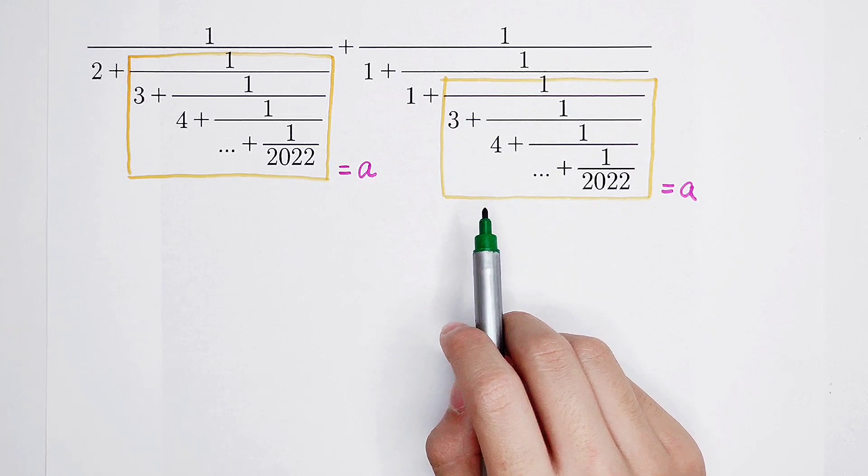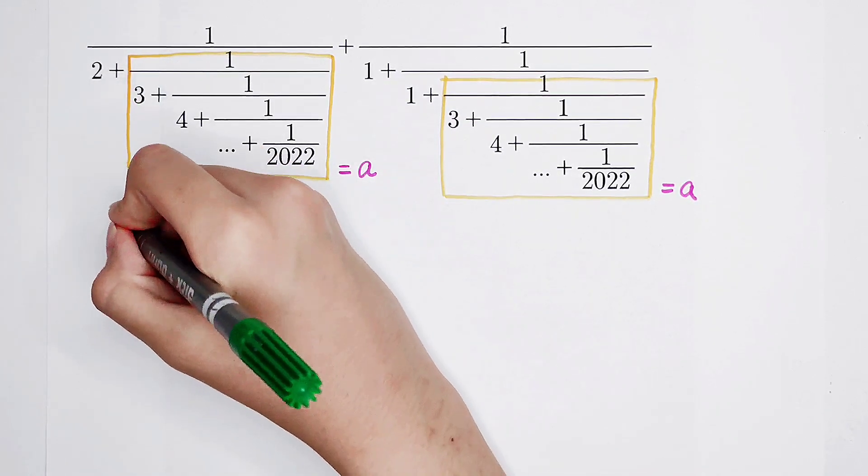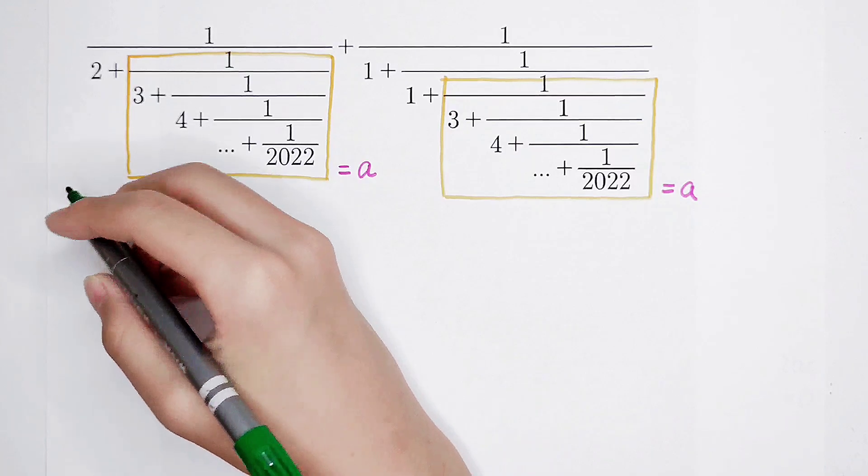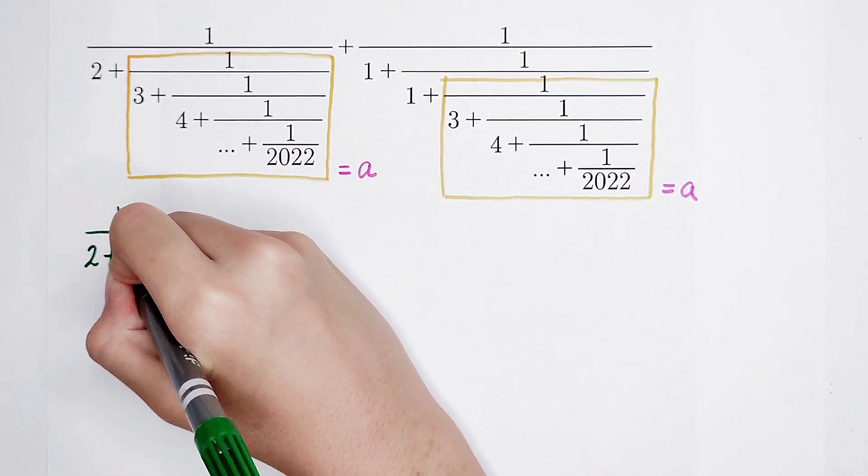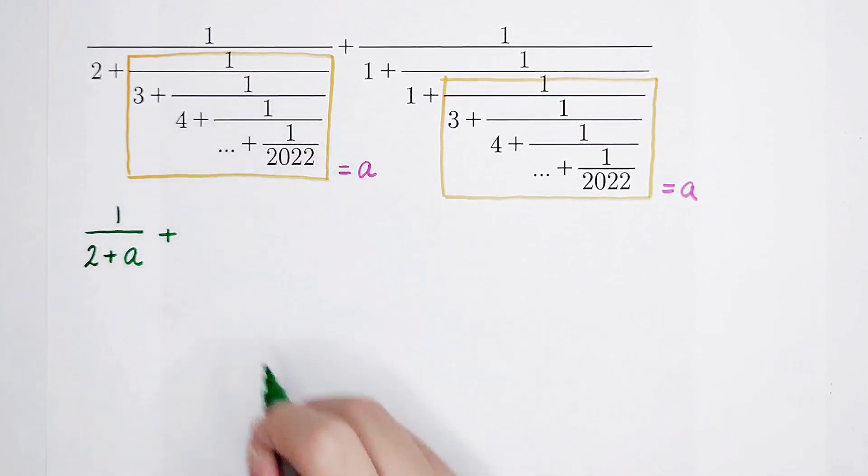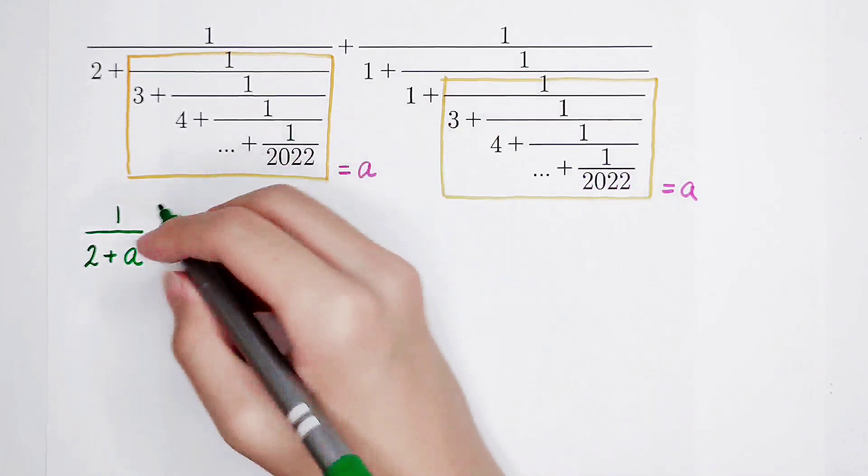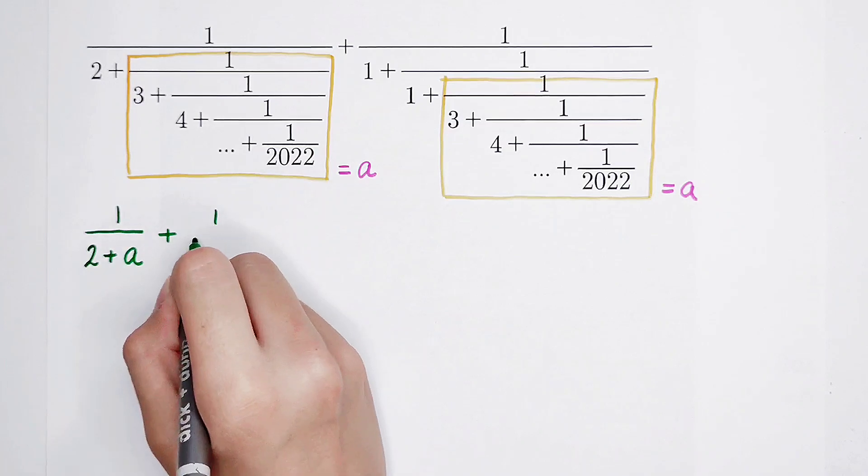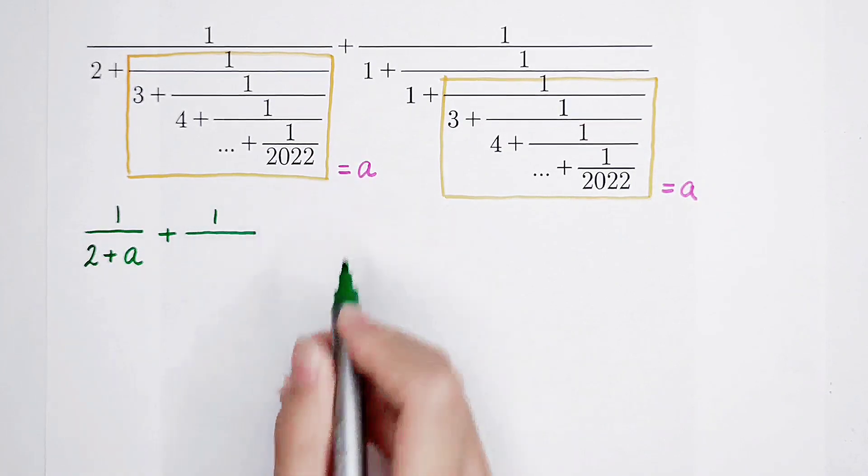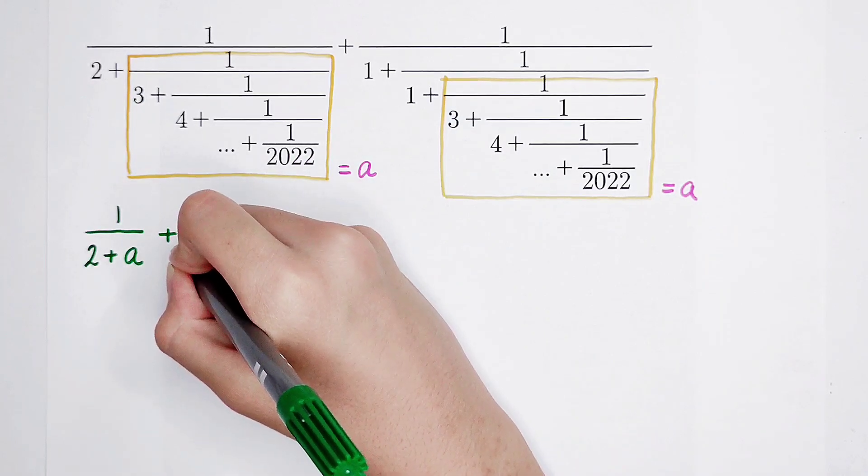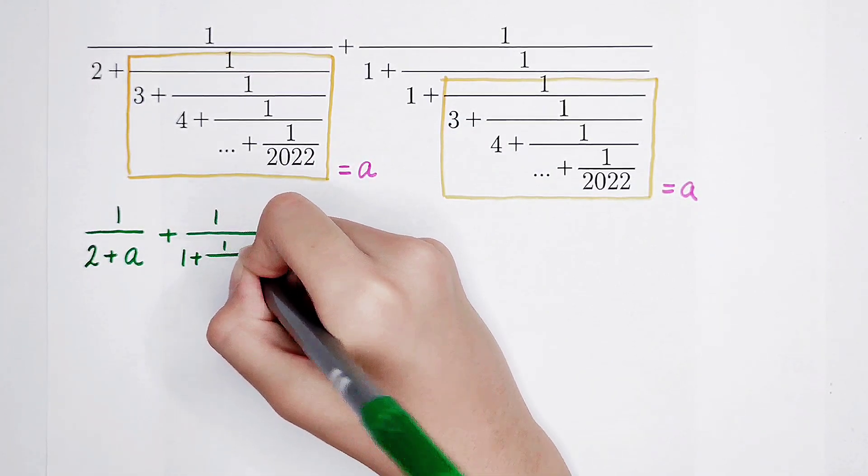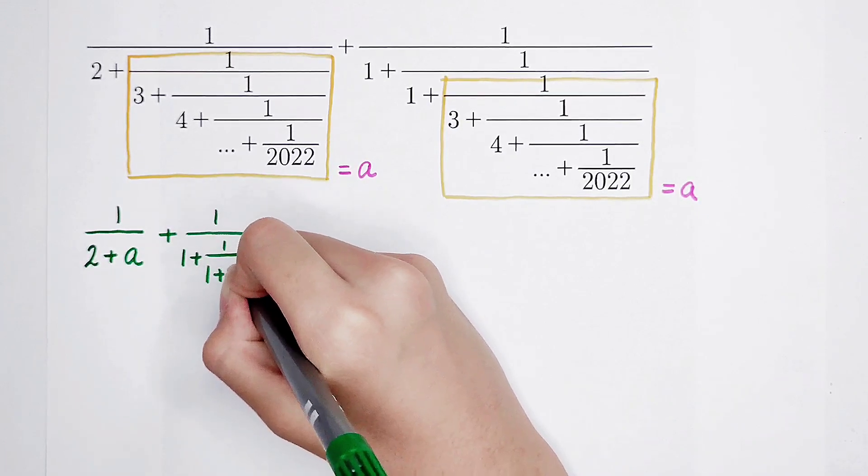Calculate the sum of these two fractions. The first fraction, the numerator is 1 and 1 over the denominator is now it becomes 2 plus a. The second fraction, the numerator is 1, and the denominator is 1 plus 1 divided by 1 plus a.